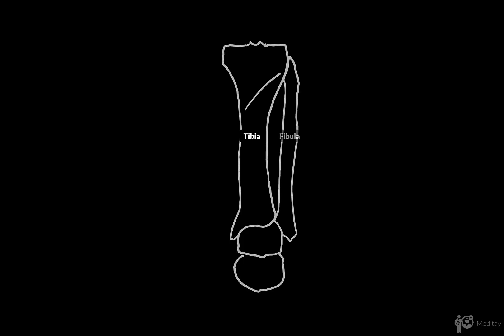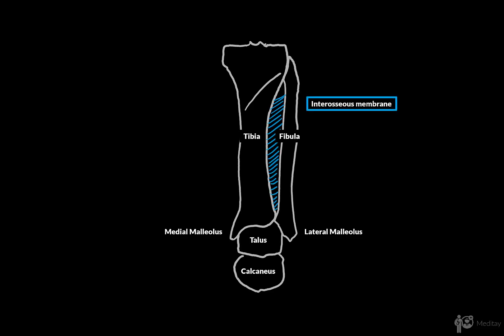Let's review some bone anatomy first by looking at the scheme. Here you see the tibia and the fibula, the medial and the lateral malleolus, then the talus and the calcaneus. And between the tibia and the fibula, there's going to be the interosseous membrane.